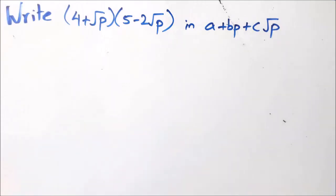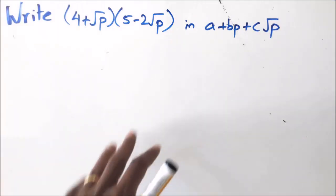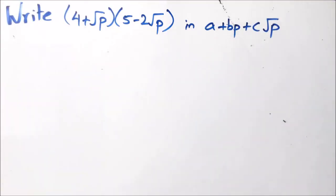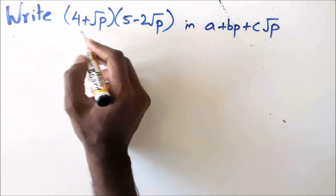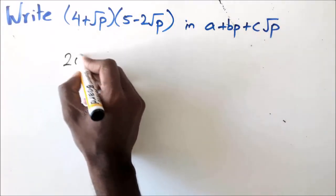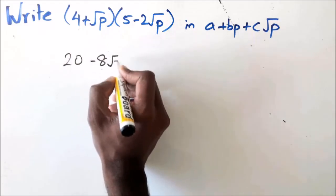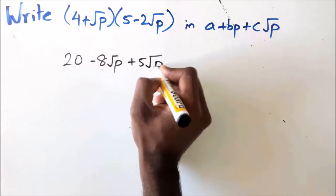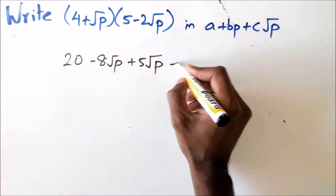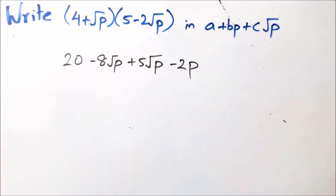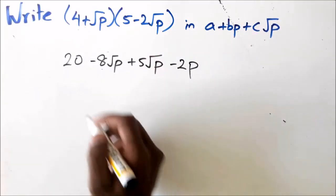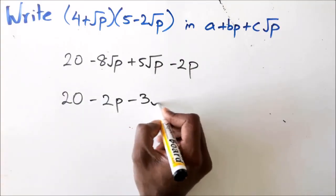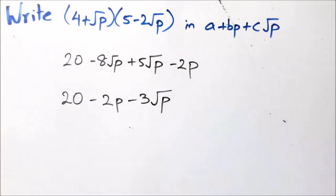The last question is just a quadratic that we're expanding and leaving in a set format. So: 4 times 5 is 20, 4 times minus 2 is negative 8√p, 5 times √p is 5√p, and √p times √p times negative 2 is negative 2p. Collecting terms, the answer is 20 minus 2p minus 3√p.